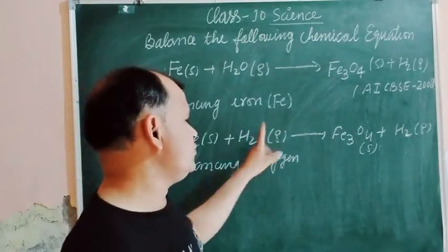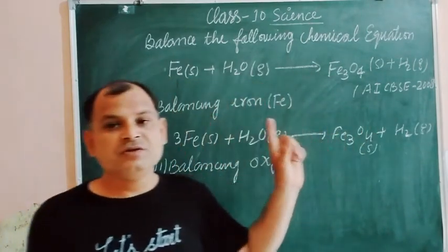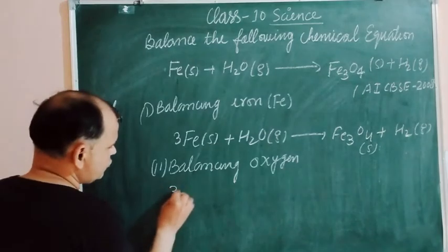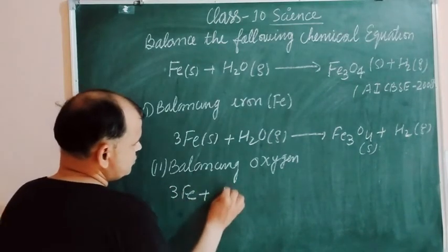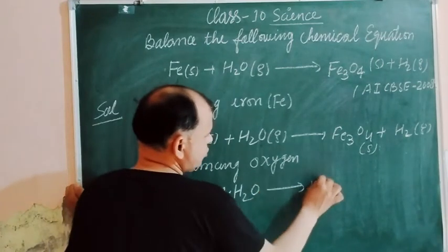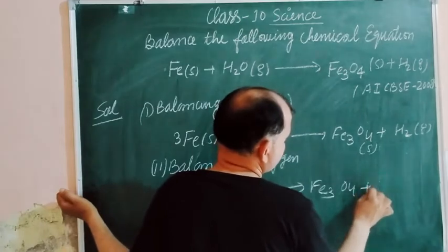Here oxygen is one atom and here is oxygen four atoms. So we multiply left side by 4. So 3Fe plus 4H2O equals Fe3O4 plus H2.